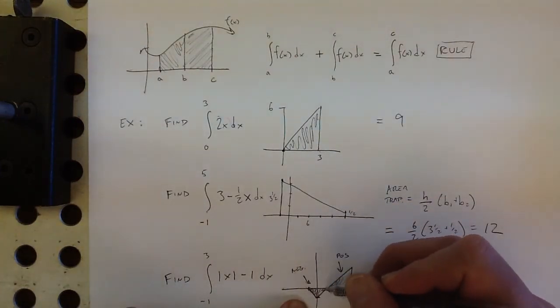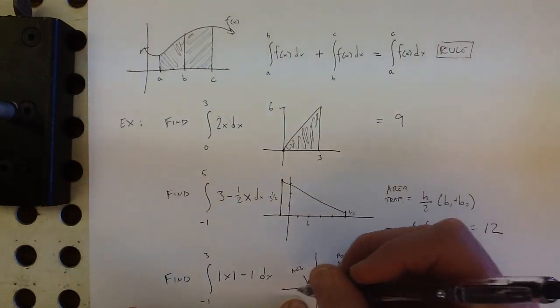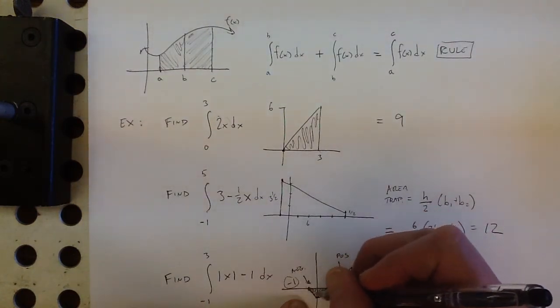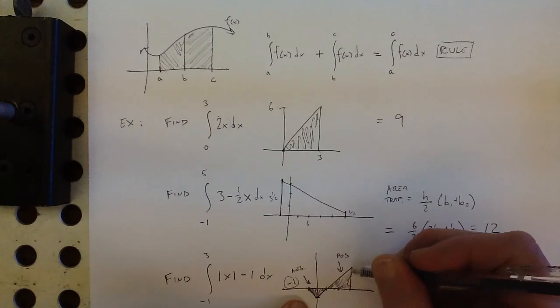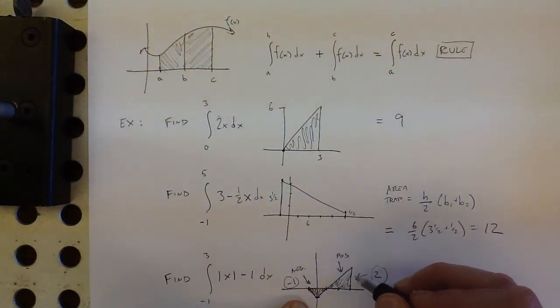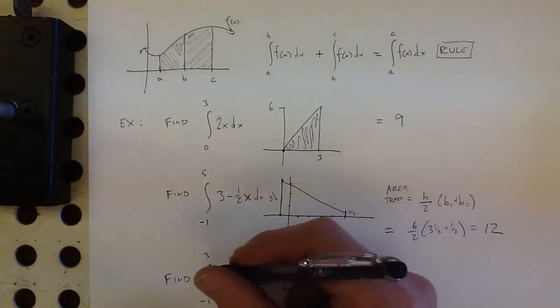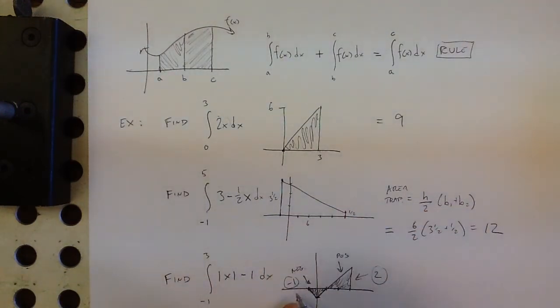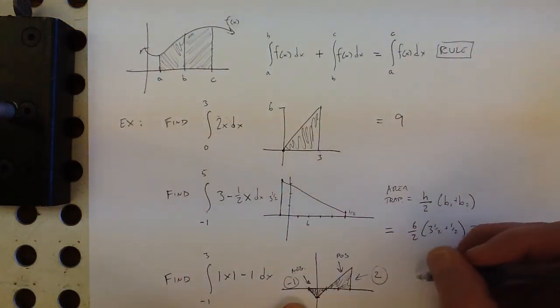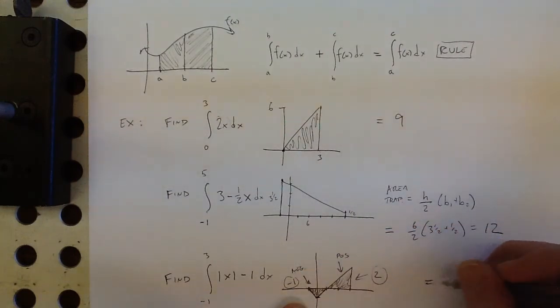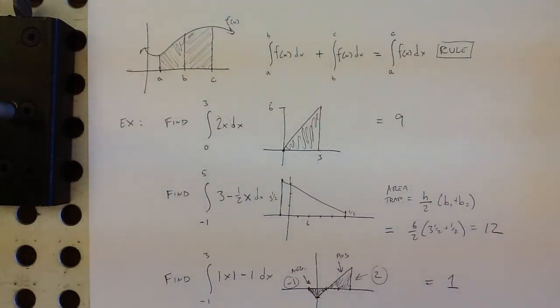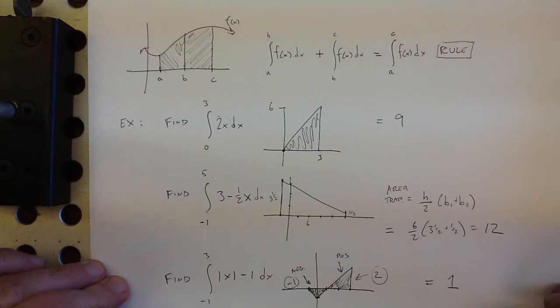So each one of these little triangles would be 1 half. So this area, that's negative 1 area right there. And this is a 2 by 2 triangle, so the area of that is 2. That's positive 2 and negative 1. So this, calculus area-wise, positive and negative area cancel each other out. Negative 1 plus 2 is 1. That's how that works in calculus class.